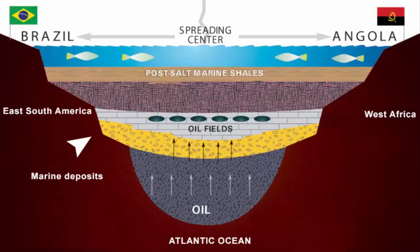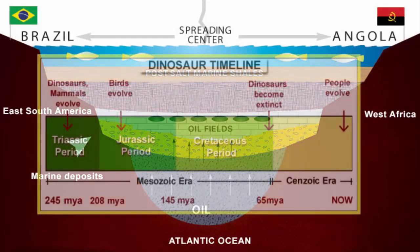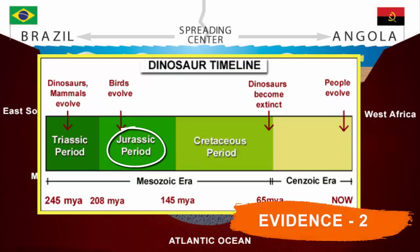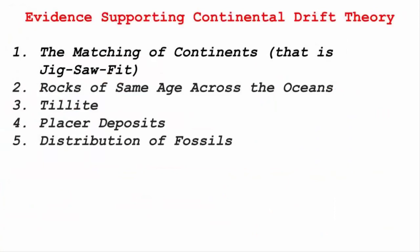For example, the belt of ancient rocks of 2,000 million years from the Brazil coast matches with those from Western Africa. It also suggests that the marine deposits in the region are from the Jurassic era — the second phase of the Mesozoic era, where reptiles ruled the continents. This forms the second evidence in support of the Continental Drift Theory.